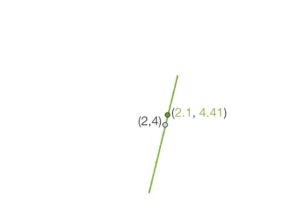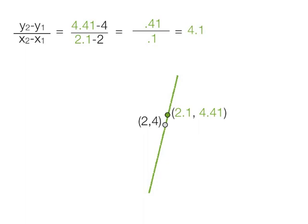Now let me get rid of everything except what we want to talk about right here. The slope is y2 minus y1 divided by x2 minus x1, and that equals 4.41 minus 4 divided by 2.1 minus 2. And this equals 4.1 divided by 0.1 or 4.1. So the slope between these two points is 4.1.